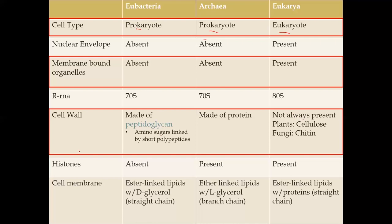The next characteristic is histones — proteins used to wrap and coil DNA to make it condensed. This is one piece of evidence showing that Archaea and Eukarya share a more recent common ancestor. Bacteria does not have histones, while both Archaea and Eukarya do. This shared feature was likely due to a common ancestor between the two, and is one of the reasons the tree of life had to be rearranged to properly represent Archaea.